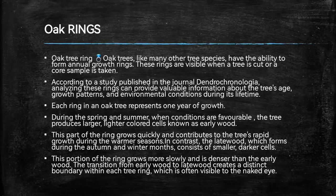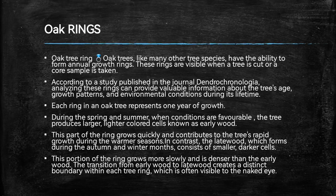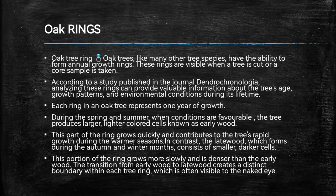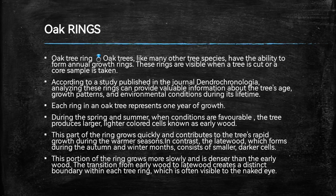Next, we are going to discuss oak tree rings. Oak trees, like many other tree species, have the ability to form annual growth rings. These rings are visible when a tree is cut or a core sample is taken. Analyzing these rings can provide valuable information about the tree's age, growth pattern, and environmental conditions during its lifetime. Each ring in an oak tree represents one year of growth. During the spring and summer, when conditions are favorable, the tree produces larger, lighter-colored cells known as early wood, which contributes to the tree's rapid growth during the warmer seasons.